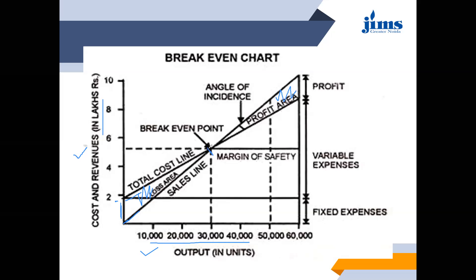The point when the cost and sales are equal is known as the break-even point. We also have the angle of incidence and margin of safety, which we will discuss later. So, when we show the break-even point in graphical form, that is known as the break-even chart. Basically, the break-even point is that point when revenues and cost are equal — a no profit, no loss situation.